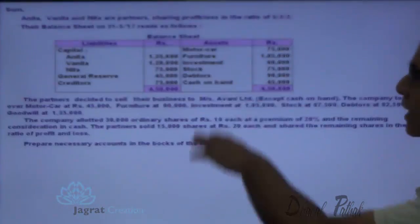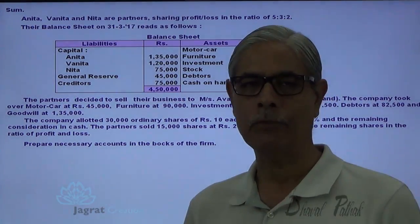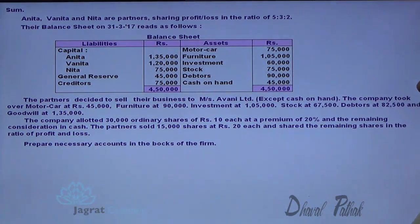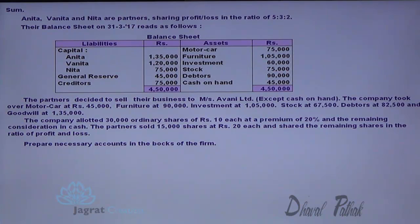This is the sum I intend to solve. Anita, Vanita and Neeta are partners sharing profits and losses in the ratio of 5 to 3 to 2. The balance sheet as on 31-3-2017 includes: motor car, furniture, investment, stock, debtors, and cash on hand on the assets side; and capital of Anita, Vanita, Neeta, general reserve, and creditors on the liabilities side.